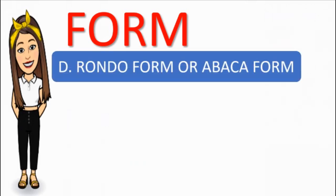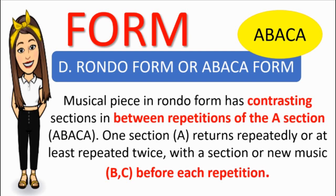A-B-A-C-A form. Rondo form is made up of five or more musical parts with some repetitions. A musical piece in rondo form has contrasting sections in between repetitions of section A. One section — A — returns repeatedly, at least twice, with new sections B and C before each repetition.